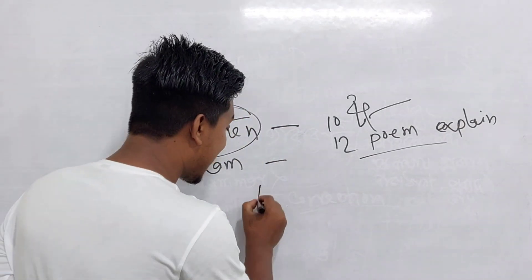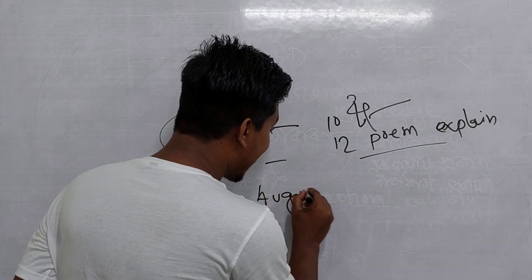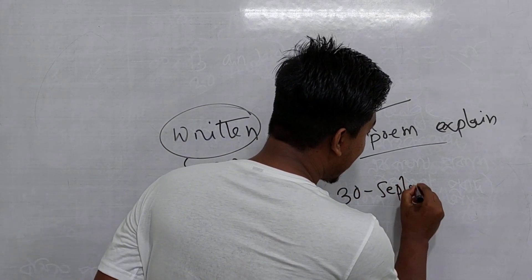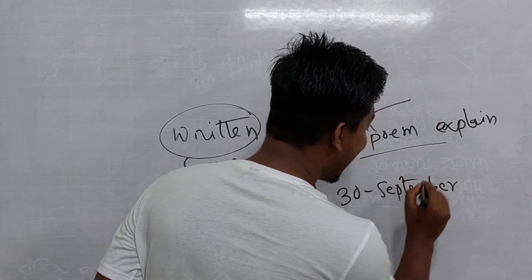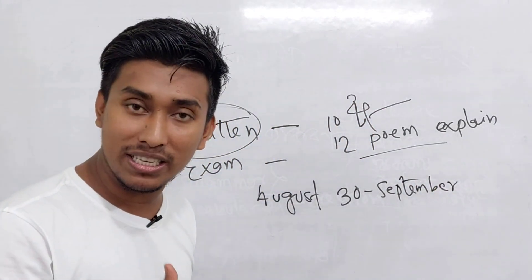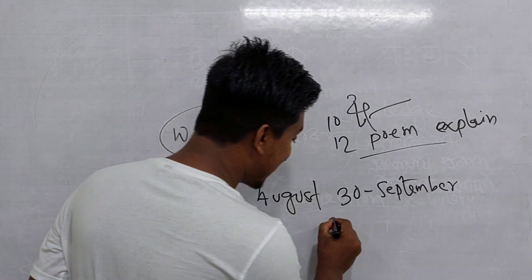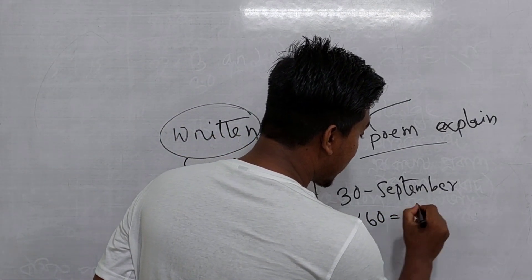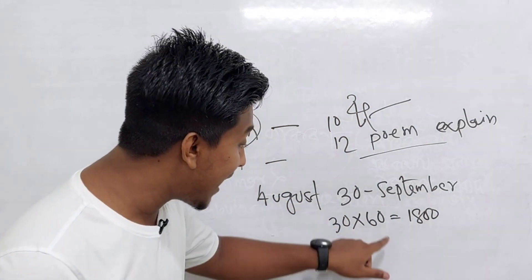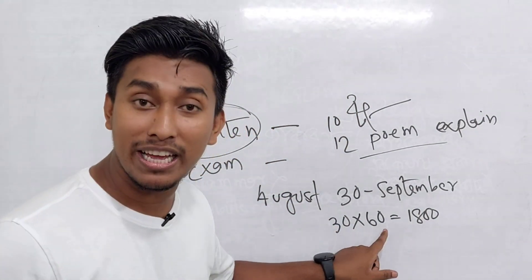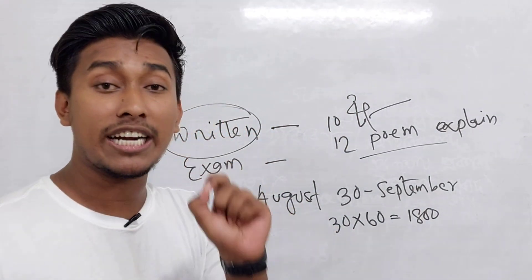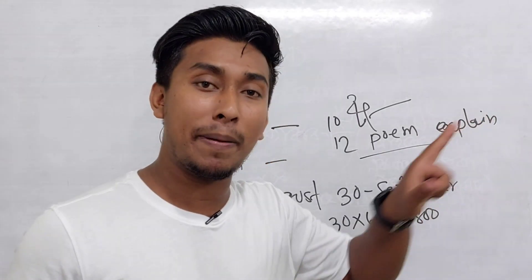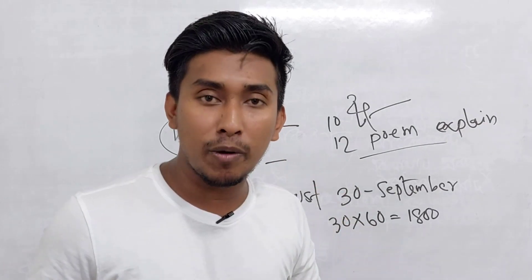We have been working on the exam — the last exam is due. We have been in August 31st and September. We have been working on the exam in August 31st for 3 days. This exam is for the great university — this is the exam for the great university.